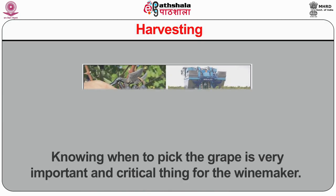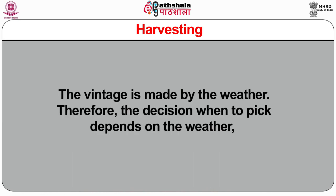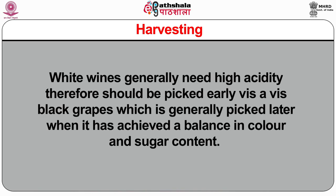There are five basic steps of winemaking. The first is harvesting. Knowing when to pick the grapes is very important for a winemaker. The vintage is made by the weather, so the decision of when to pick depends on weather conditions. White wines generally need high acidity and should be picked early, while black grapes are generally picked later when they have achieved a balance of color and sugar content. Before the harvest, winemakers spend time in the vineyard sampling grapes and checking sugar content with a refractometer. Harvesting can be done manually or mechanically — manual harvest ensures quality but is time-consuming and labor-intensive, while mechanical harvest is quick and inexpensive but the desired quality might not always be achieved.